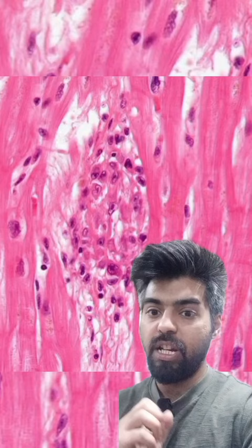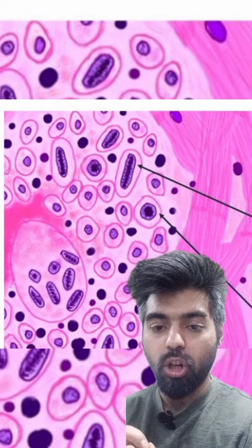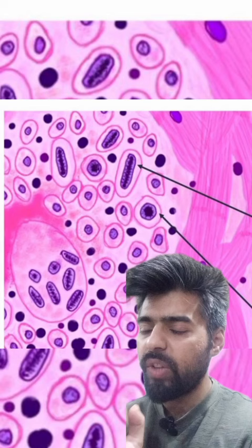Aschoff's body is one of the main diagnostic features in rheumatic heart disease. Formation of the Aschoff's body occurs in three stages. Stage one is called the early stage, also known as the degenerative stage. It occurs within one to four weeks of the illness.